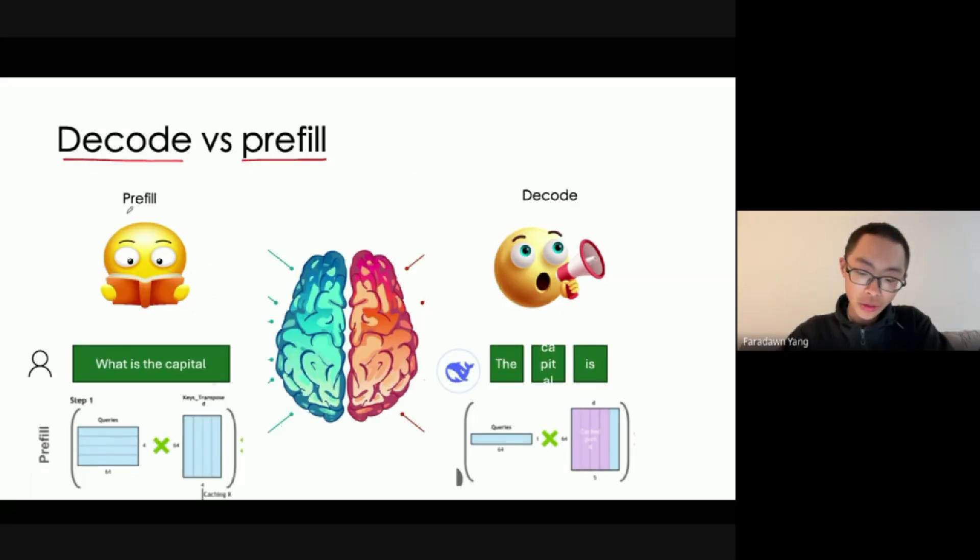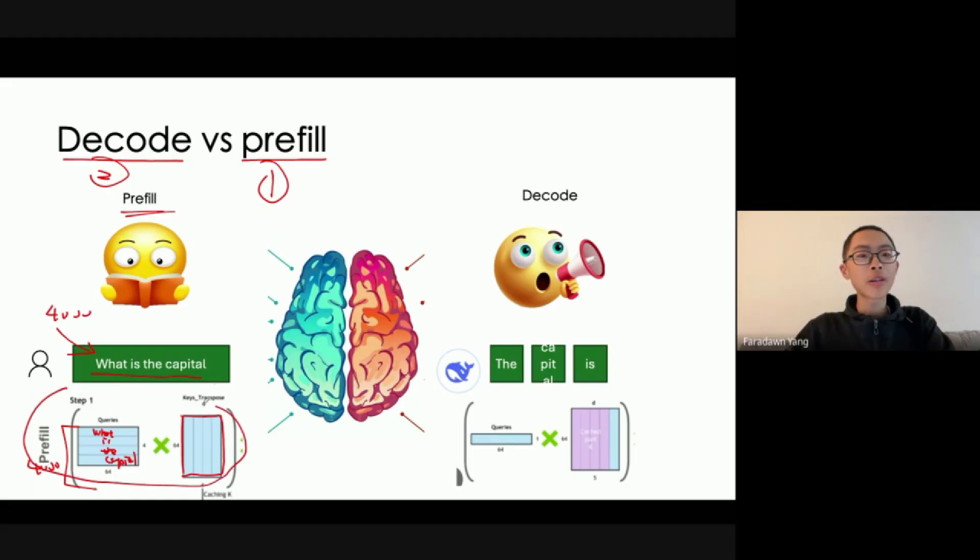Has anyone heard of Prefill and Decode? Probably no. Prefill is the first phase and Decode is the second. When you give a prompt, say 'what is the capital of the US,' it will first do the Prefill phase. So 'what is the capital' will be filled in this input matrix. If you give it a 4000 word essay, this will be a 4000 dimension matrix, and the matrix multiplication will be very huge, 4000 multiplied by 4000. This is the Prefill phase, which can be done in parallel matrix multiplication, requiring super high compute.